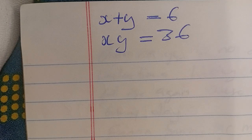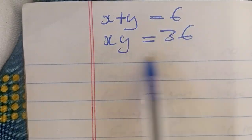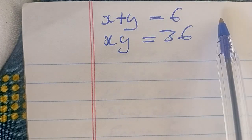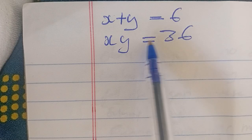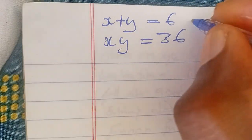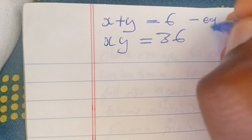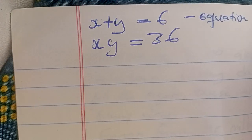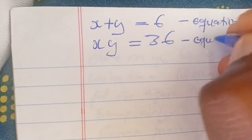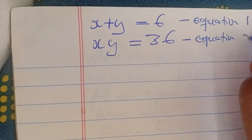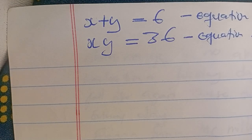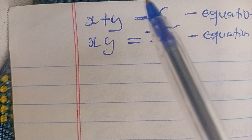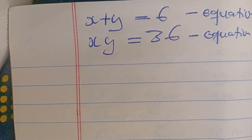Welcome back to the class. Today we are going to look at this equation. We have x plus y is equal to 6 — let's call this equation 1 — and xy is equal to 36 — let's call this equation 2. This is a simultaneous equation and we can choose to use elimination or substitution methods to solve it.